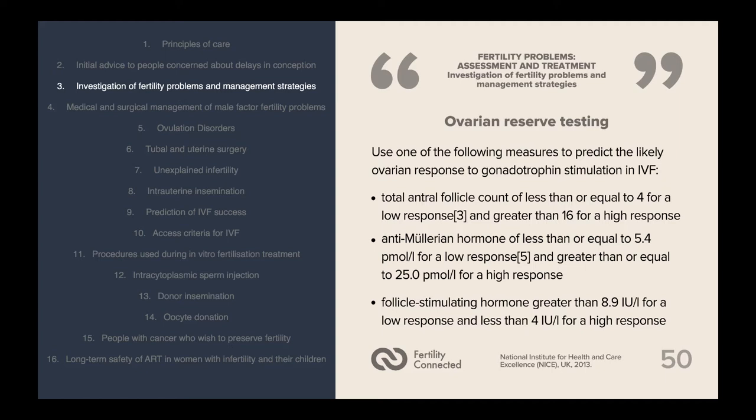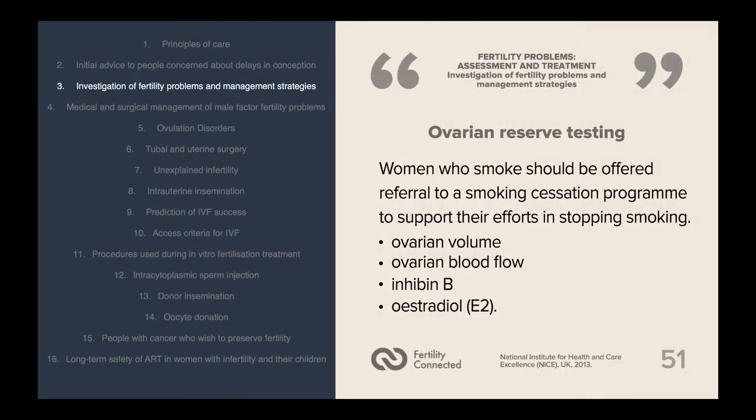For follicle stimulating hormone, the ranges are greater than 8.9 international units per litre for a low response and less than 4 international units per litre for a high response. Do not use any of the following tests individually to predict outcomes of fertility treatment: tests of ovarian volume, ovarian blood flow, inhibin B, and estradiol E2 tests.